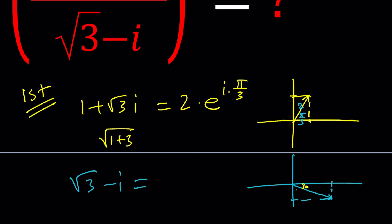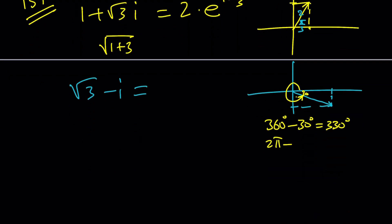In other words, it's 360 - 30. You can also think of it as 330 degrees, or you can write in radians as 2π - π/6, which is the same thing as 11π/6.